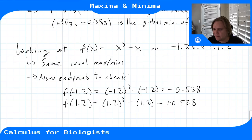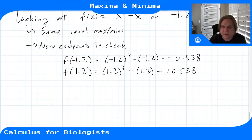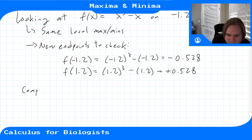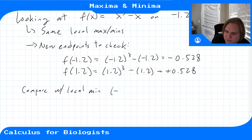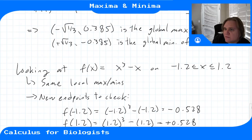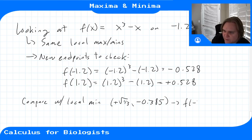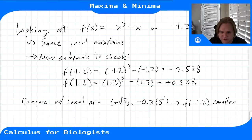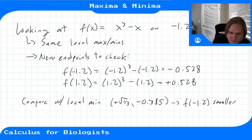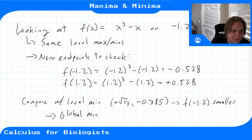Comparing with the local extrema—the local min was at +√(1/3) with value -0.385—f(-1.2) = -0.528 is smaller. So because that's smaller, the global minimum is now at (-1.2, -0.528), even though the derivative is not zero there; it simply has the smallest overall value.